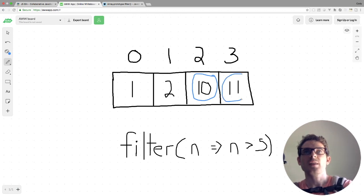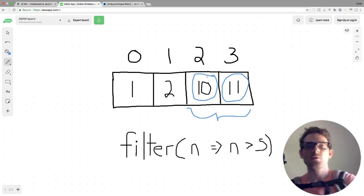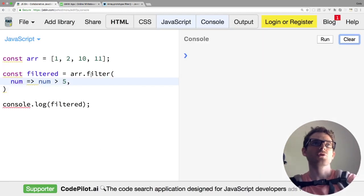So these two elements, 10 and 11, are going to be returned in our filter. So let's go ahead and move over to the JSBin and just kind of visualize that with JavaScript.